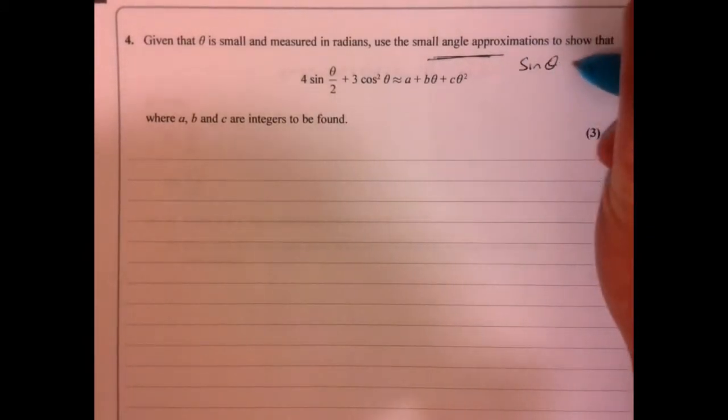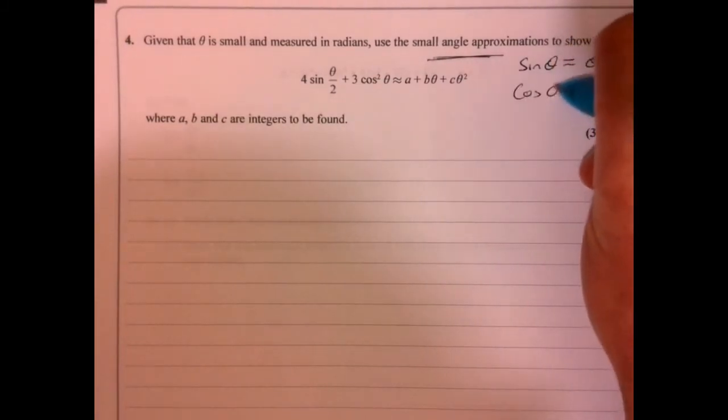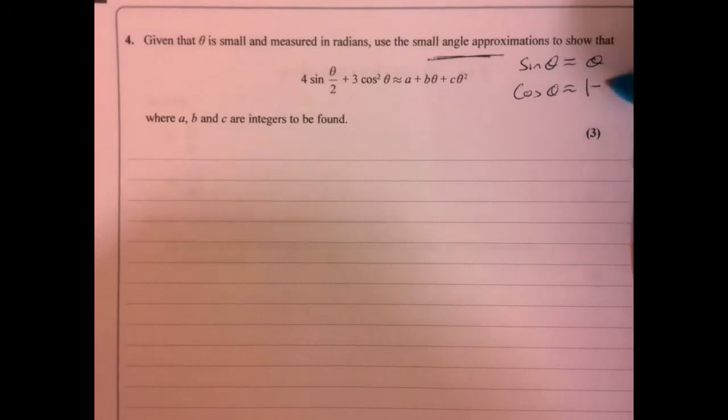So I think with sine theta is approximately theta, anything cos theta is approximately one minus half theta squared. Now, this question will be a lot easier if we just think about how else we can write that part here.